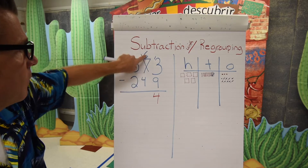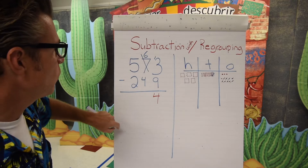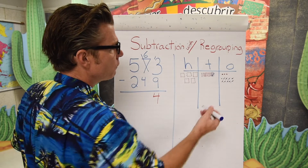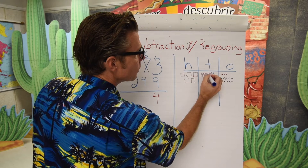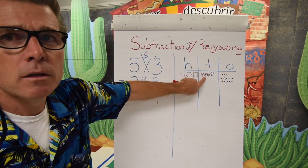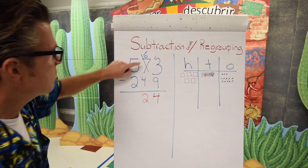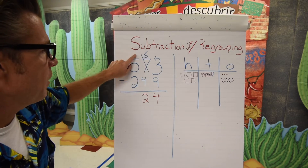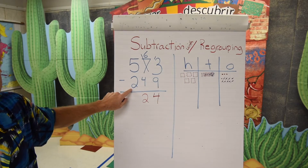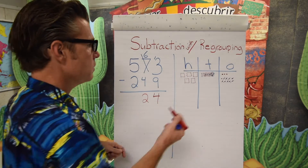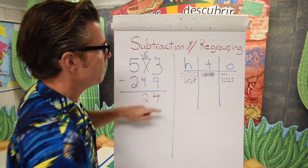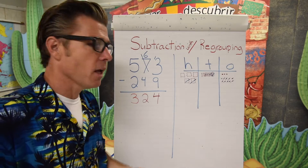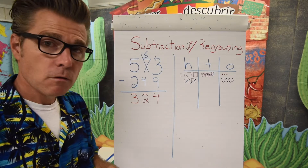Six and four — if we're taking four away from six, that works. We remove four from the tens, leaving us with two tens. Six minus four is two. Moving to the hundreds spot, we have five hundreds and we're removing two, which leaves three hundreds. So the difference is three hundred and twenty-four.